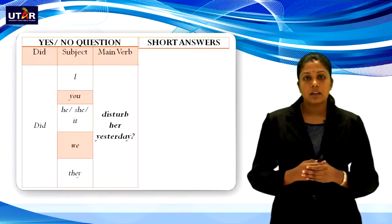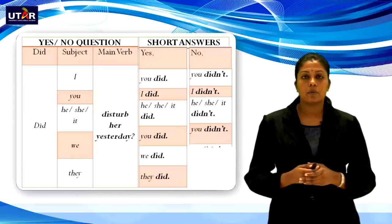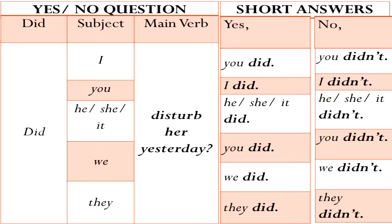Now let's look at yes/no questions. Did will be used at the beginning of the sentences. For example: Did I disturb her yesterday? The main verb disturb is in base form because we have used the auxiliary verb did. Other examples: Did you disturb her yesterday? Did he disturb her yesterday? Did she/it/we/they disturb her yesterday? The kinds of answers you can anticipate for yes/no questions are either yes, you did, or no, you did not.